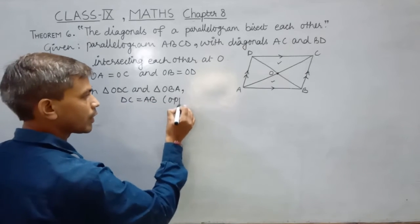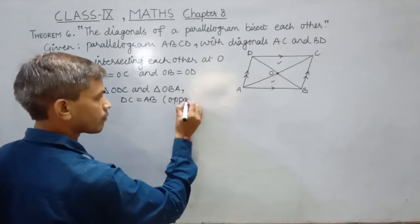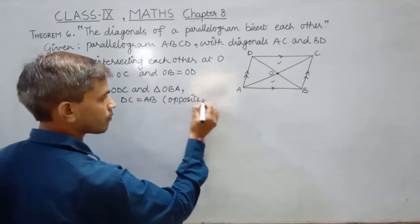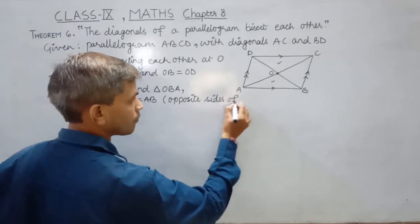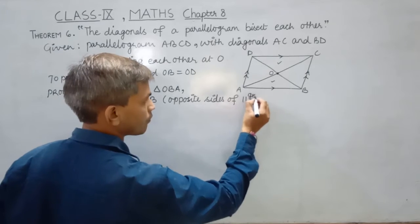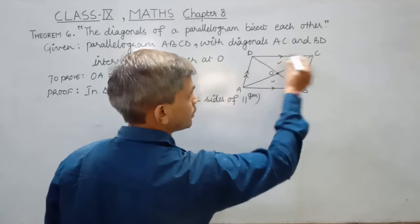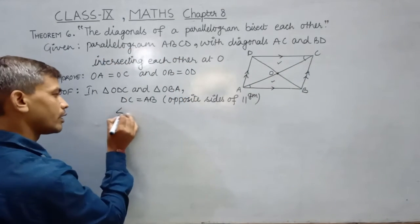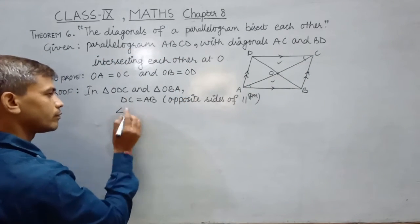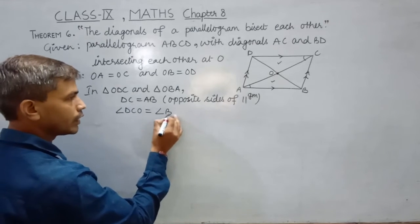These are opposite sides of the parallelogram, and angle DCO is equal to angle BAO.